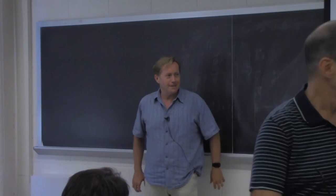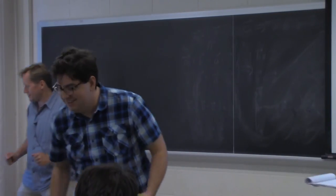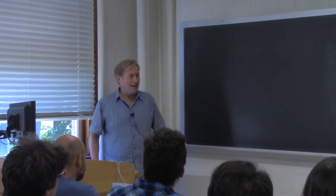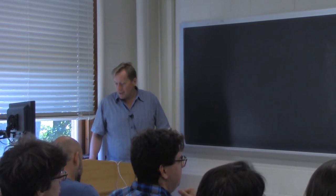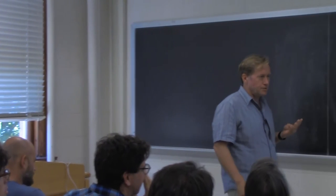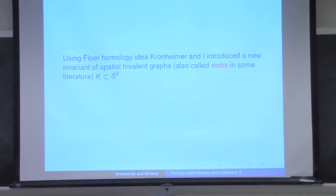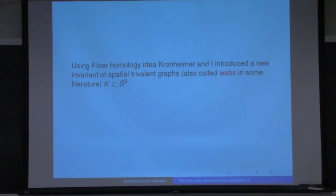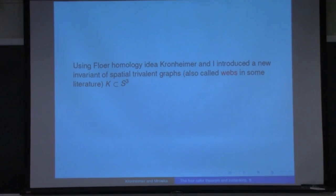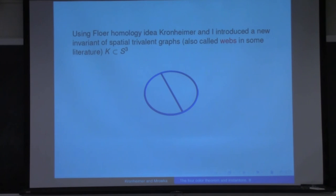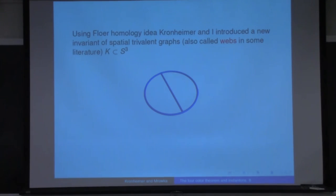What I want to tell you about is a story about how to construct invariants of knotted trivalent graphs in three-manifolds that generalizes invariants that Peter Kronheimer and I and many others have been looking at for knots in three-manifolds. There's a nice knot, and this is the simplest interesting example of a theta web. There's a lot of literature from the physicists who like to call these things webs.